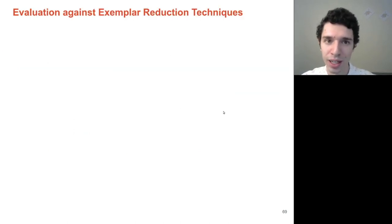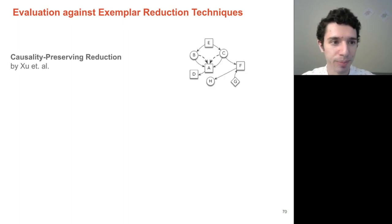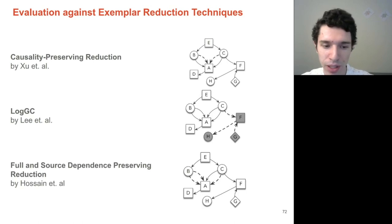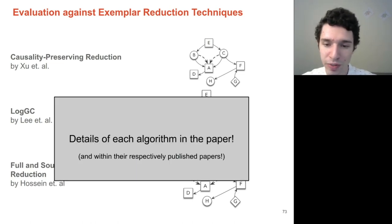We then compare LogApprox against a series of reduction techniques: causality preserving reduction, which preserves information flow; LogGC, which tries to remove audit logs that do not affect the current state of the system; and full and source dependency preserving reduction that focuses on the single analyst task of preserving dependencies between entities. The details of each algorithm are in the paper, and we encourage you to check it out.